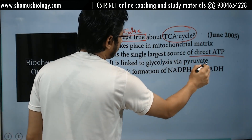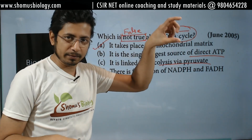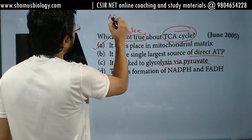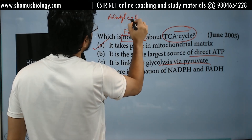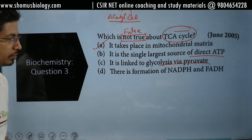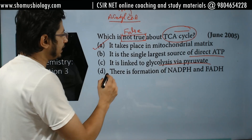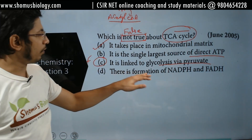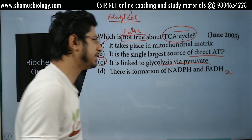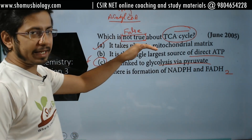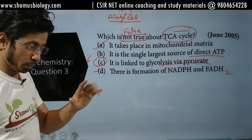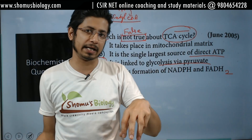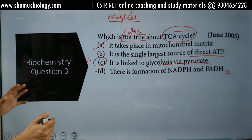Option C: it is linked to glycolysis via pyruvate — is it? How exactly is the TCA cycle linked with glycolysis? The intermediate here is not pyruvate — it is acetyl-CoA. Pyruvate needs to be converted to acetyl-CoA by the pyruvate dehydrogenase complex first, and then acetyl-CoA enters the TCA cycle. So glycolysis and the TCA cycle are not linked directly via pyruvate — this is a false statement. Option D: there is formation of NADH and FADH2 — that is also true. So the false statement is that the TCA cycle and glycolysis are linked via pyruvate. Although pyruvate plays an integral role, it must first be converted to acetyl-CoA, which then enters the TCA cycle. So C should be the answer.